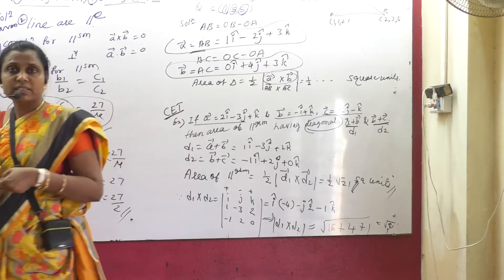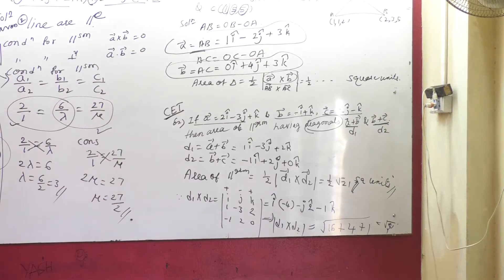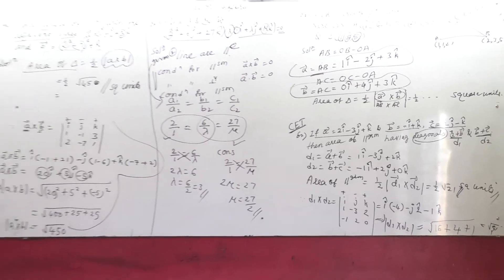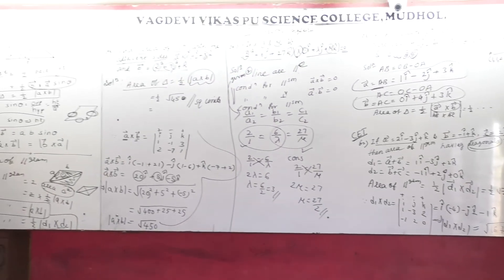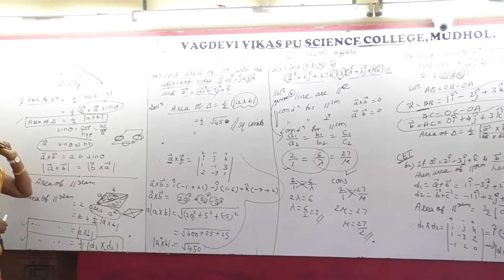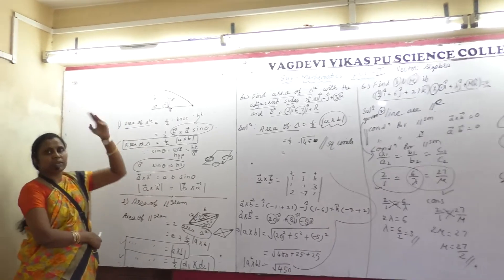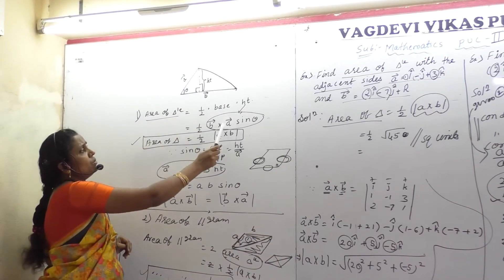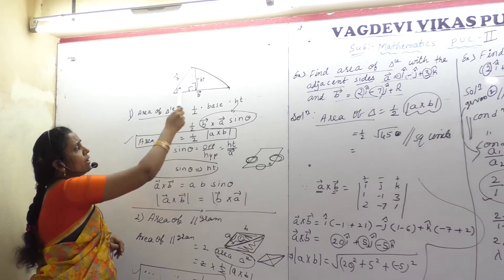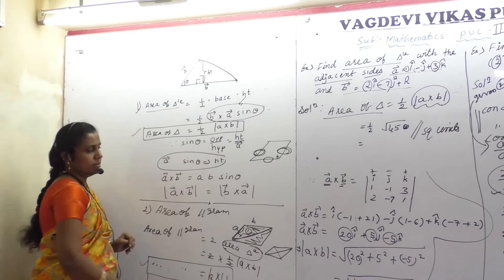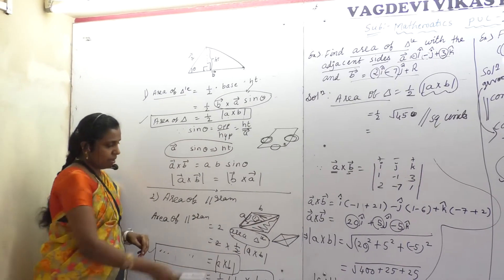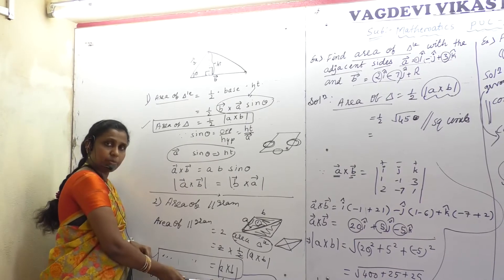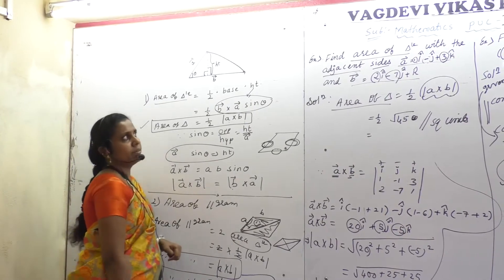Listen students, what are we studying here? Application of vectors — application of cross product, you can say. Cross product is used to find out area of triangle, area of parallelogram when adjacent sides are given, and area of parallelogram when diagonals are given.